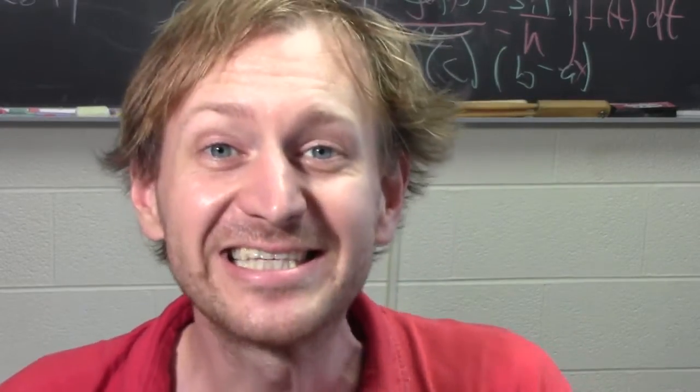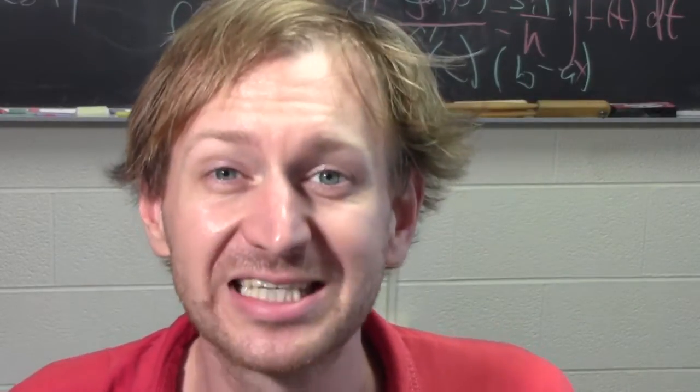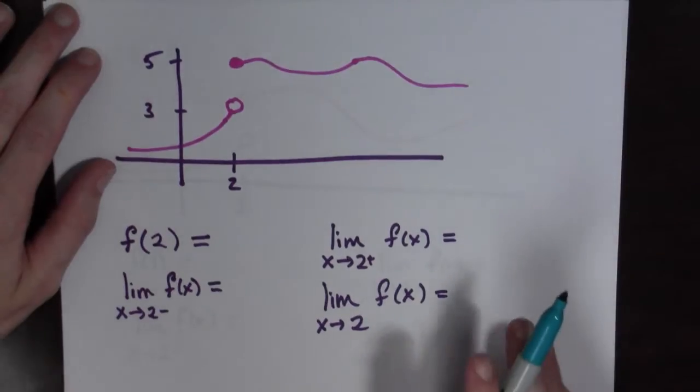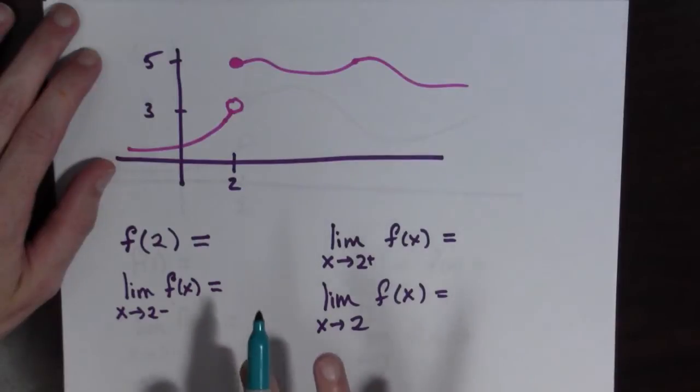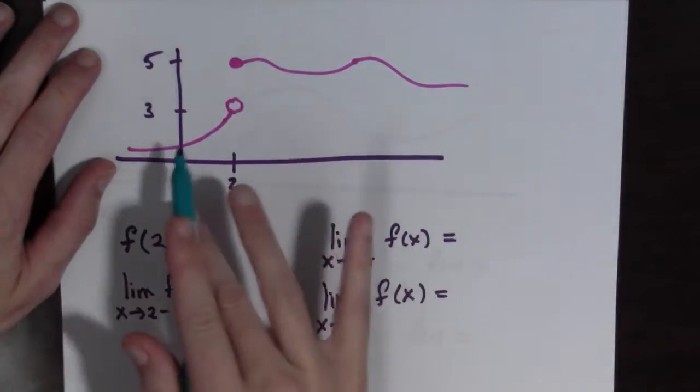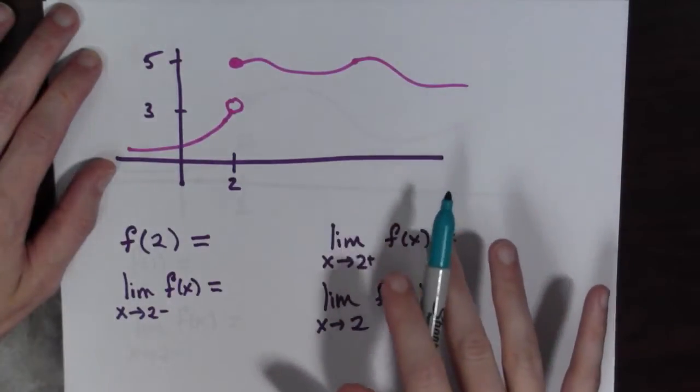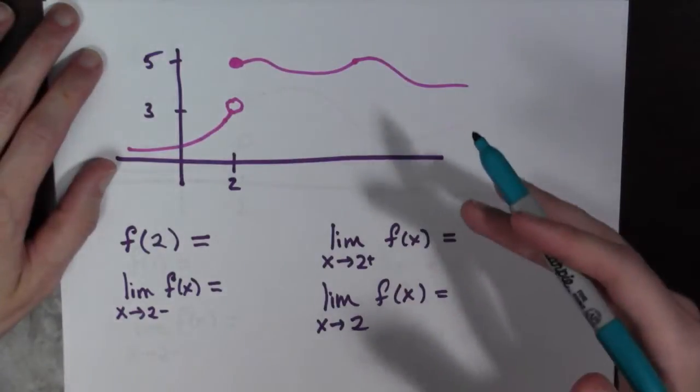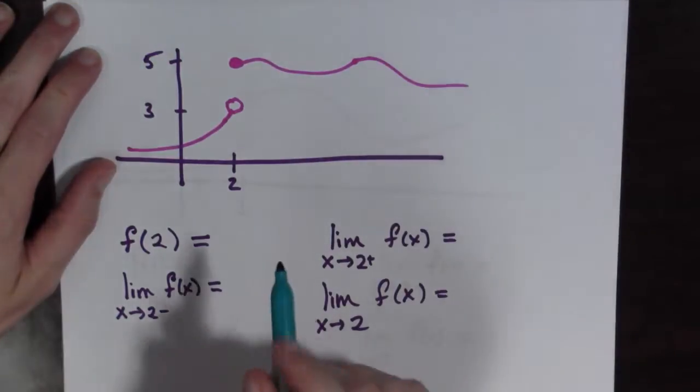Hi there. We've seen several examples of one-sided limits. Often when you're talking about one-sided limits, you have a function whose plot looks something like this. To gain a better understanding of what's going on here, let's answer some questions.